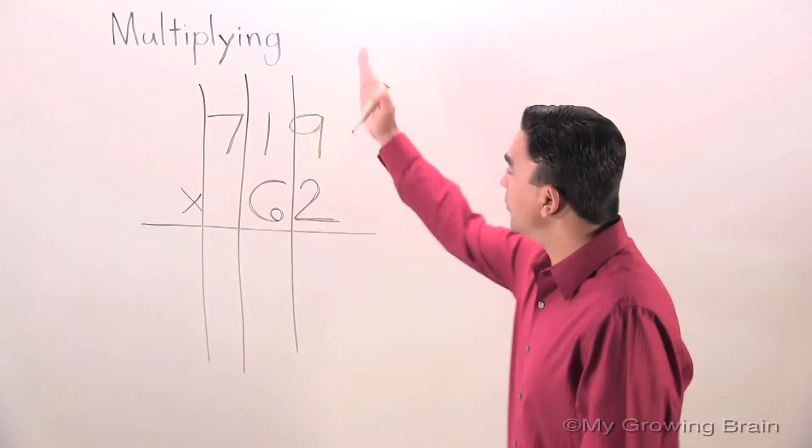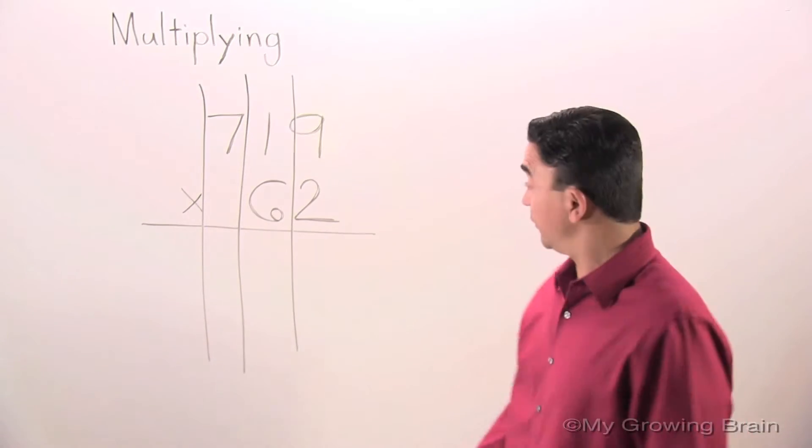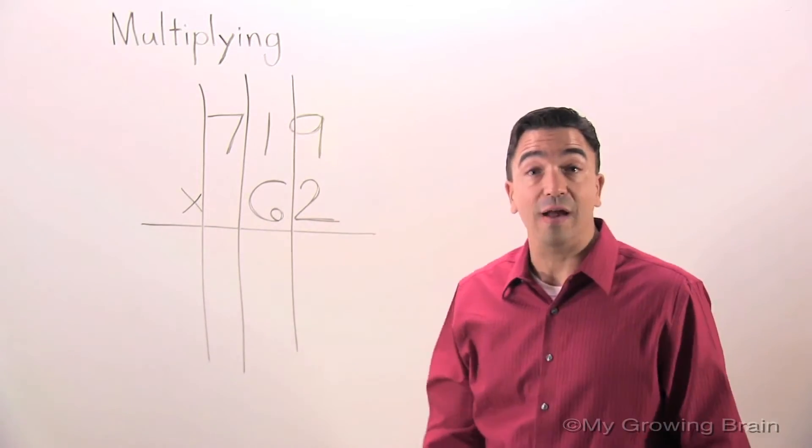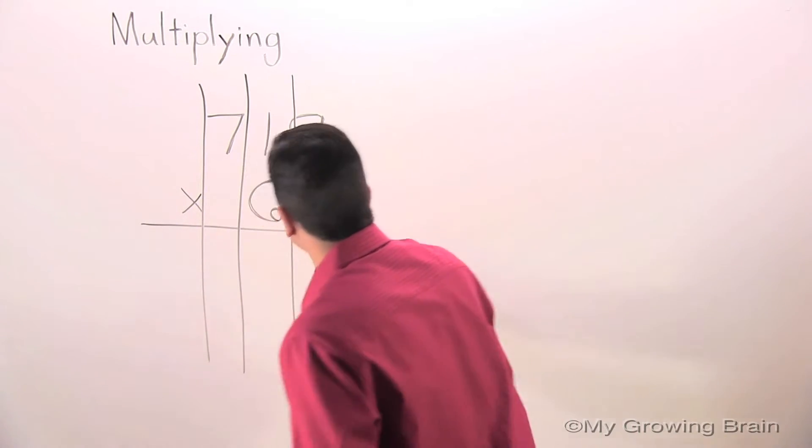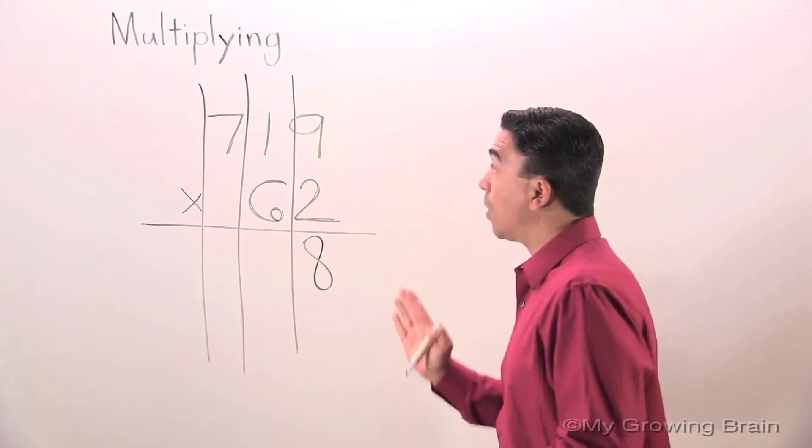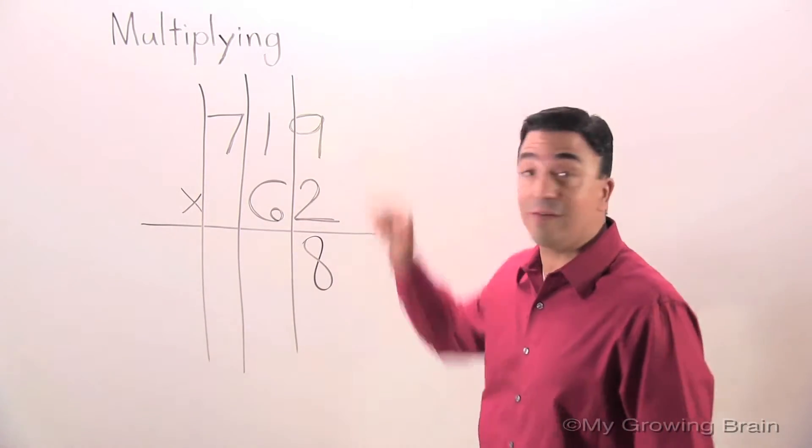All right, I'm going to start in the ones place. Two times nine is 18. I'm going to carry the one or regroup the one into the tens place.